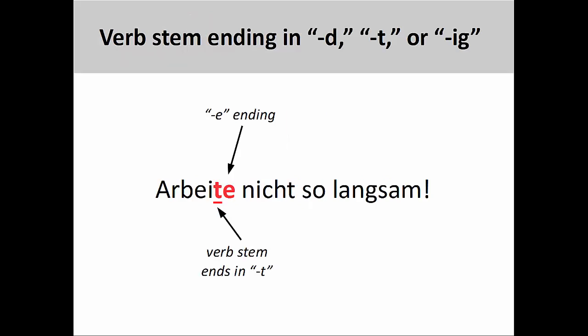This ending is not optional, however, if the verb stem ends in d, t, or ig. For example, since the verb stem in arbeiten, meaning 'to work,' ends in a t, we must add an e to the imperative form: 'Arbeite nicht so langsam,' 'don't work so slowly.'